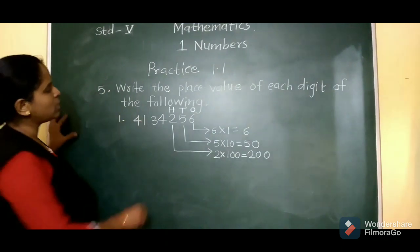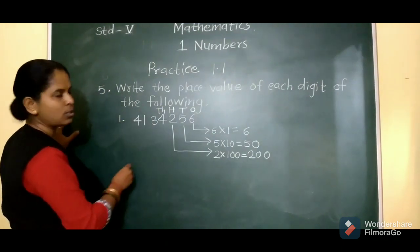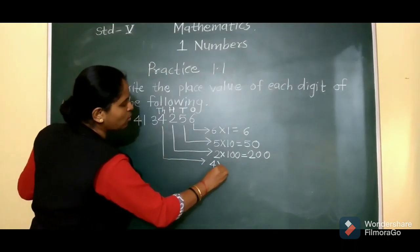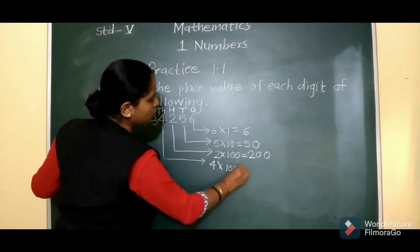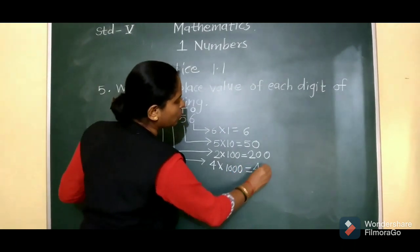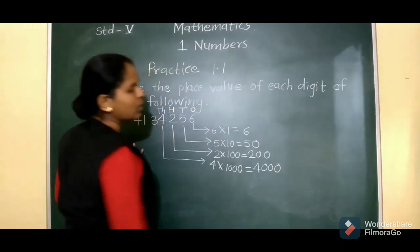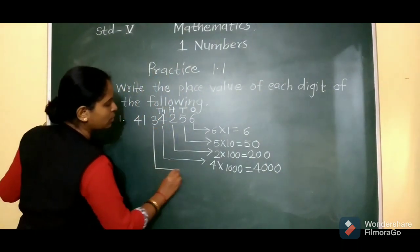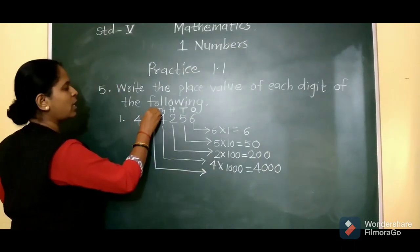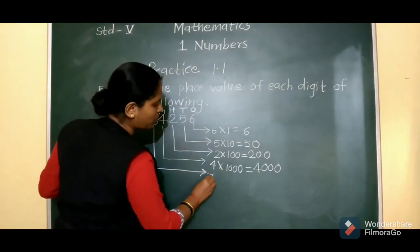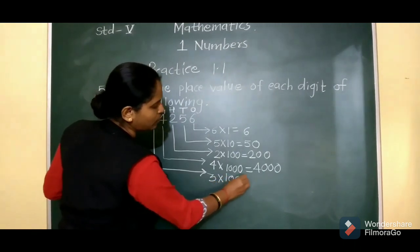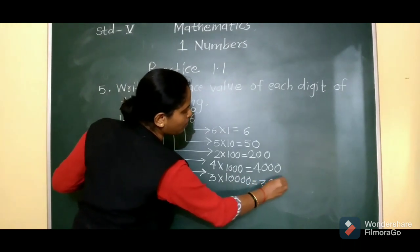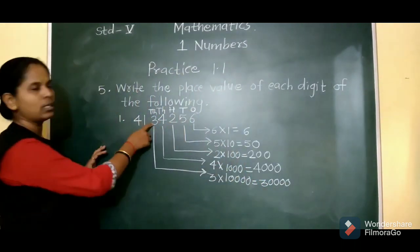2 into 100 is 200. Next digit is 4, which is at 1,000's place, so 4 into 1,000 is 4,000 — the place value of 4 is 4,000. Next digit is 3 — 3 is at 10,000 place, so 3 into 10,000 is 30,000. The place value of 3 is 30,000.